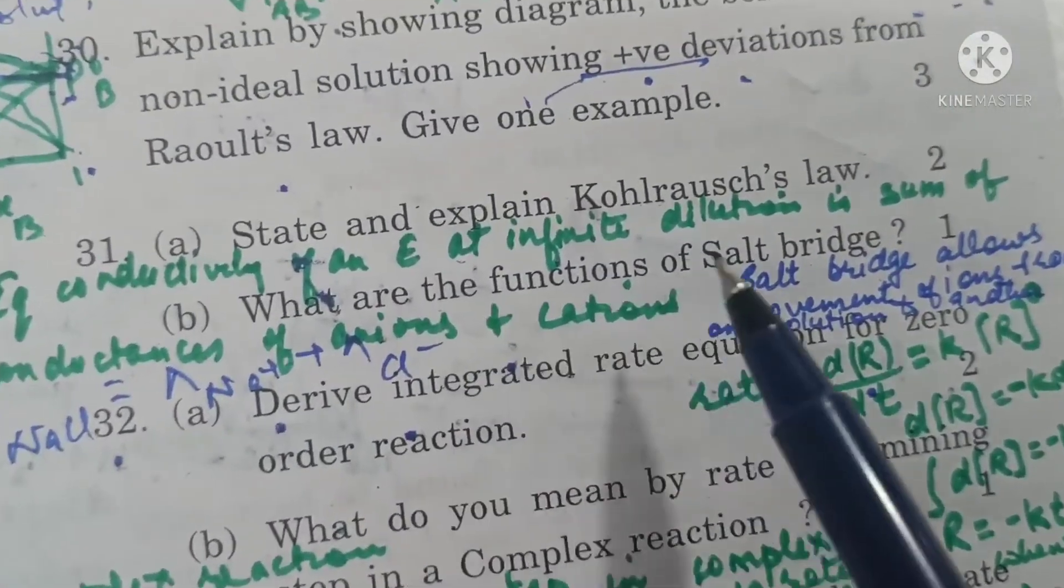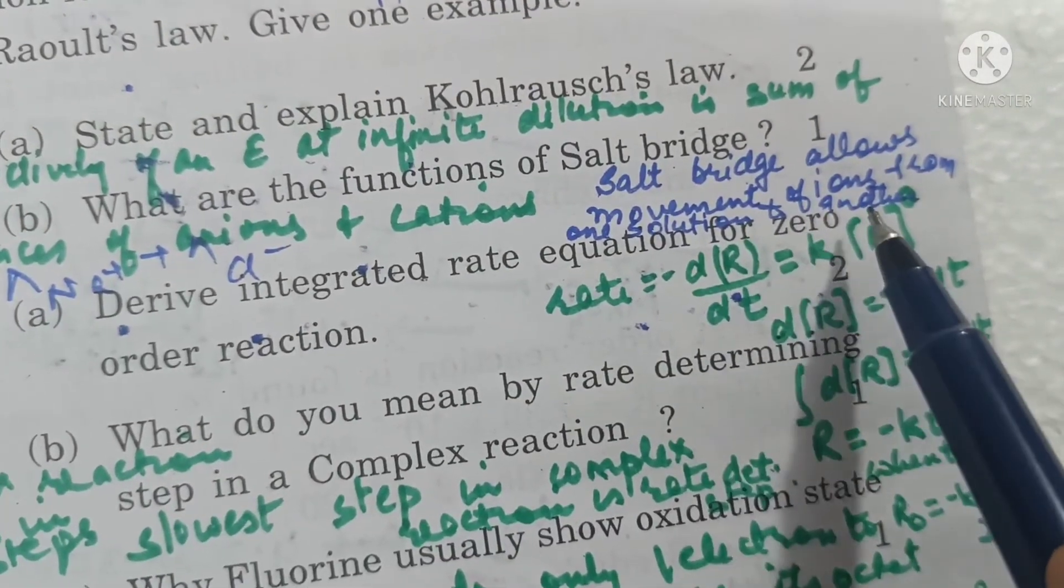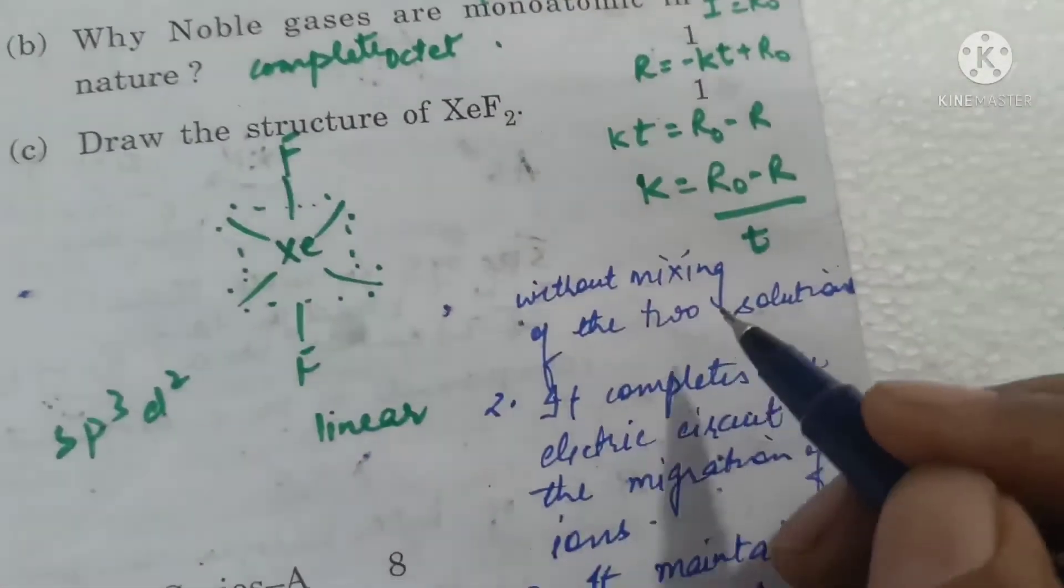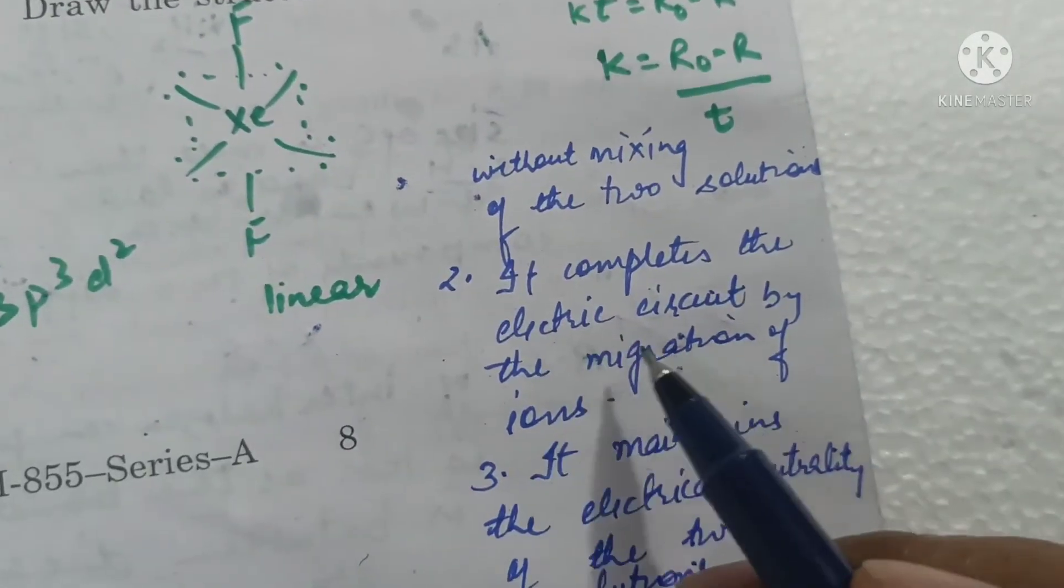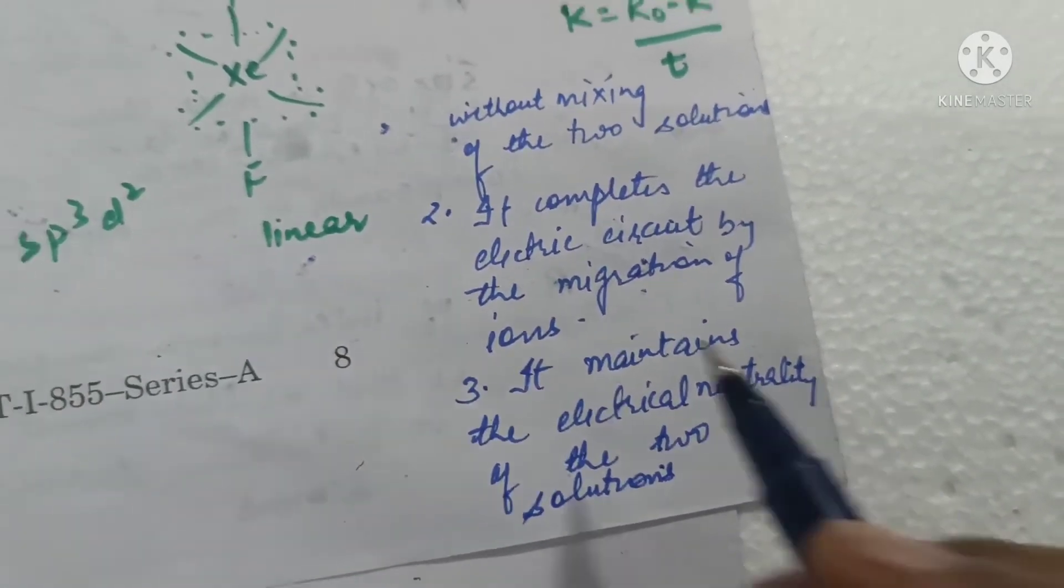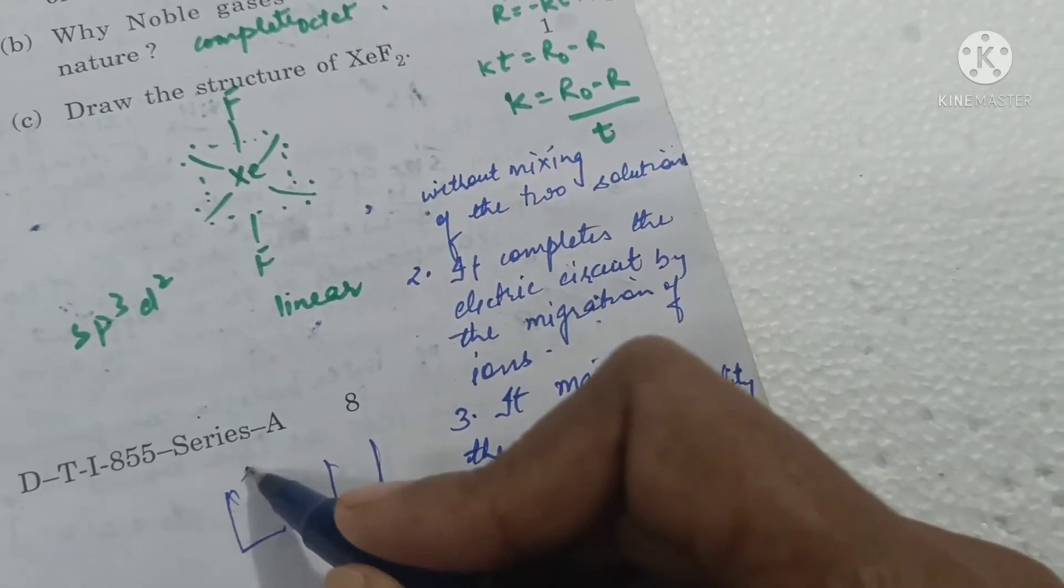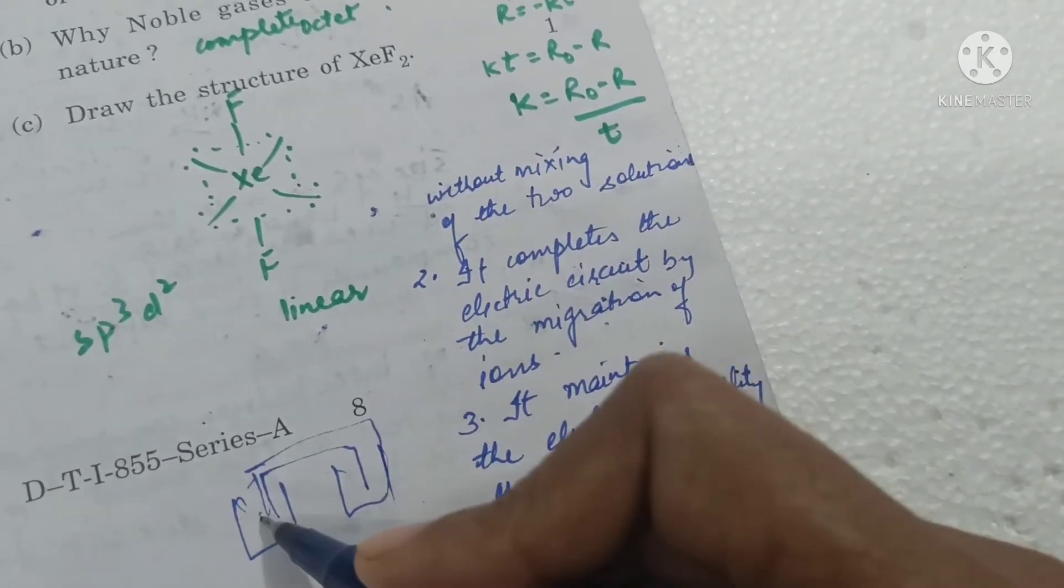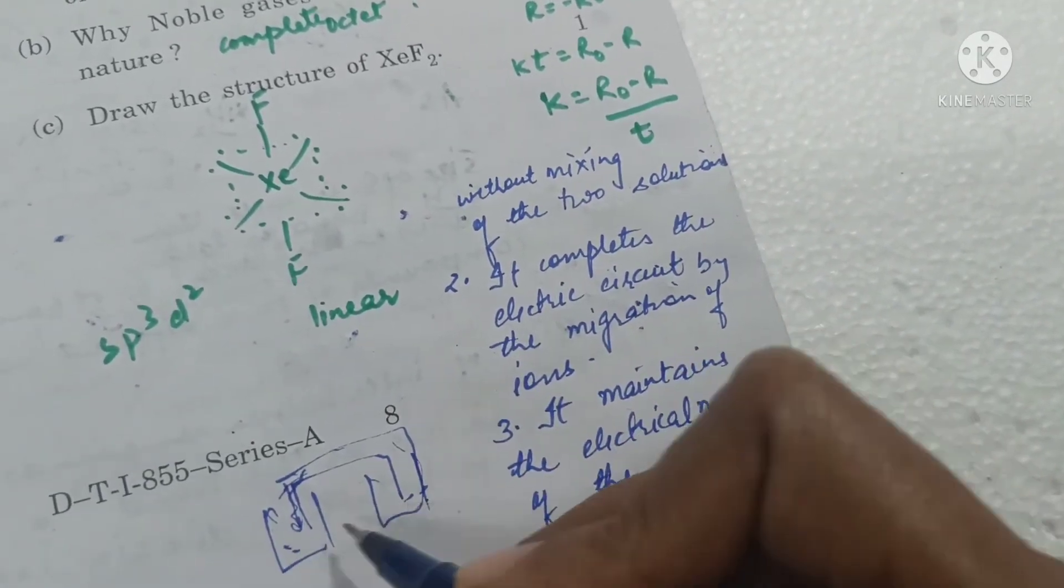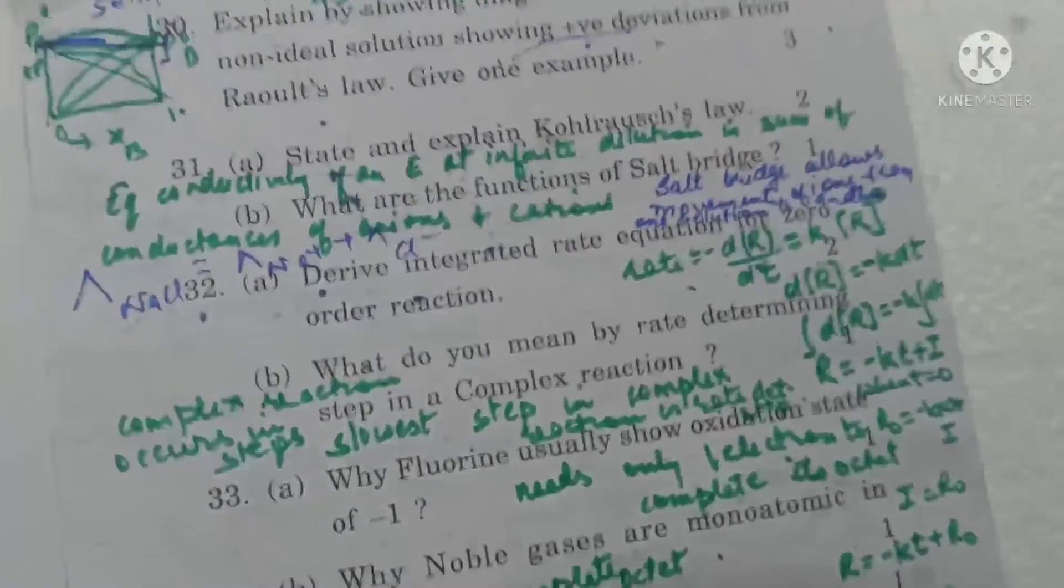What are the functions of salt bridge? A salt bridge allows movement of ions from one solution to another without the mixing of the two solutions. It completes the electric circuit by the migration of ions and it maintains electrical neutrality of the two solutions. The ions move from this solution to other via salt bridge thereby not allowing the solution to mix. The neutrality is maintained and the reaction continues.